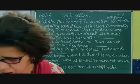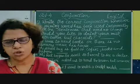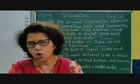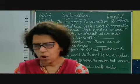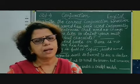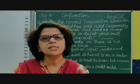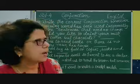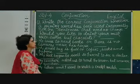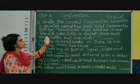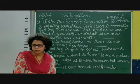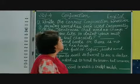So children, these are the coordinating conjunctions: for, and, nor, but, or, yet, and so — collectively known as FANBOYS. Now let us do an exercise which is given in your course book. It is exercise C1, on page number 87.